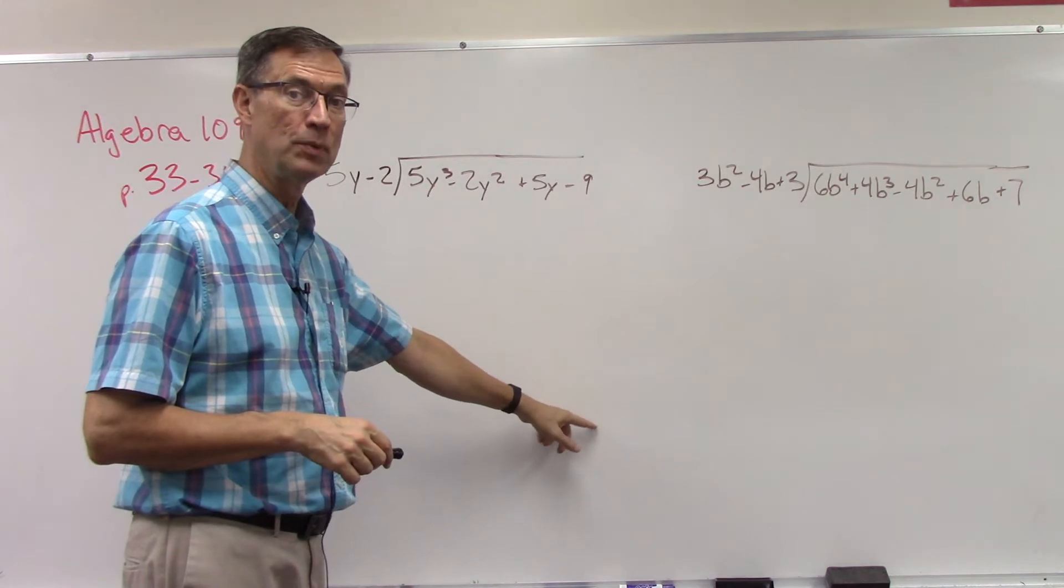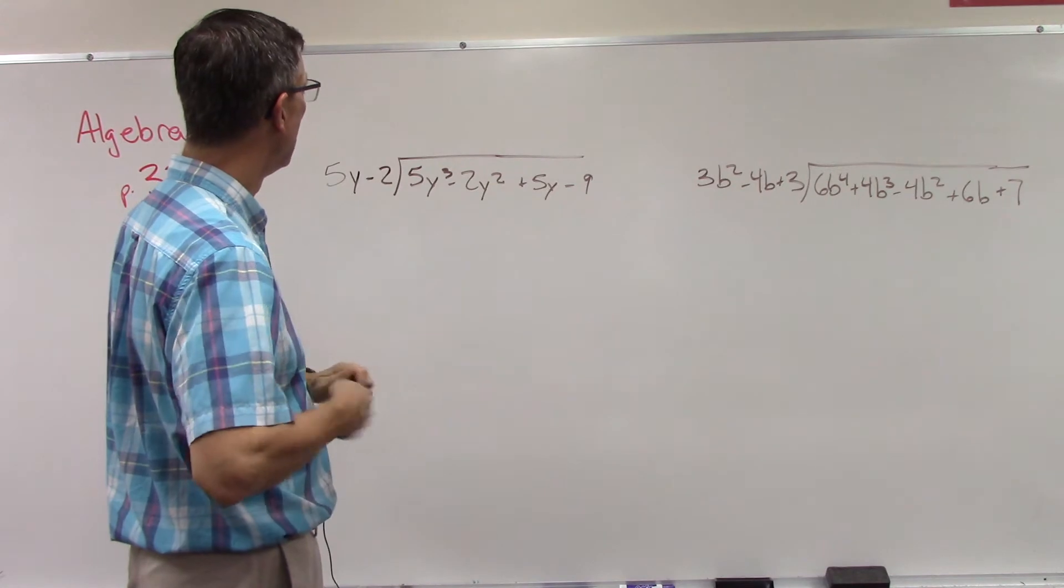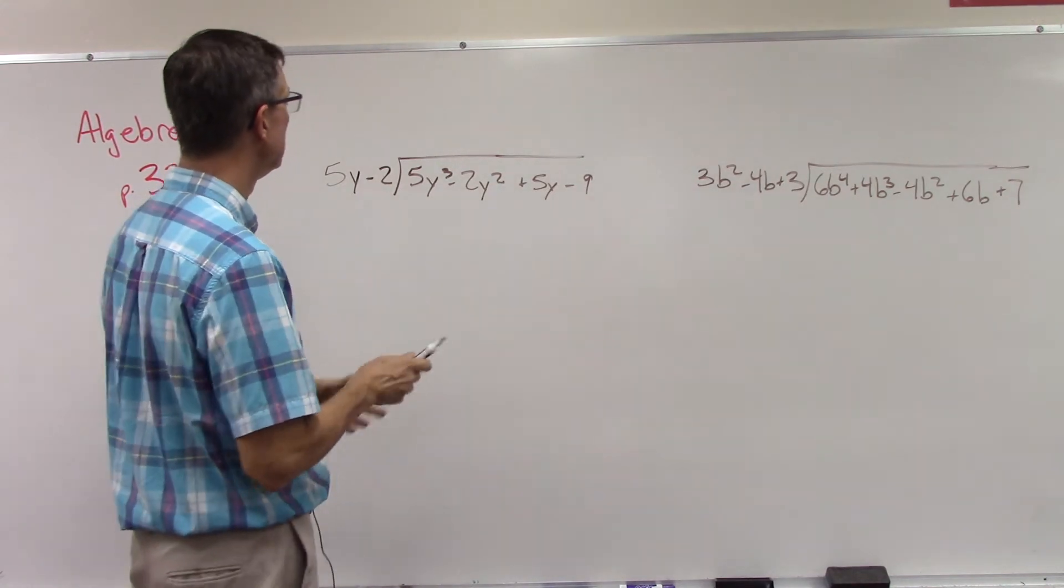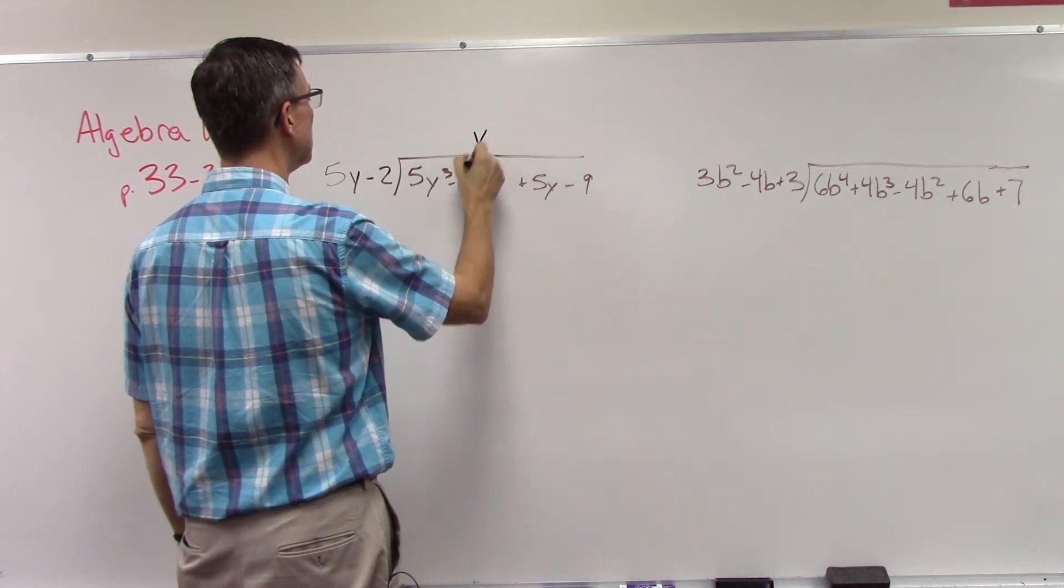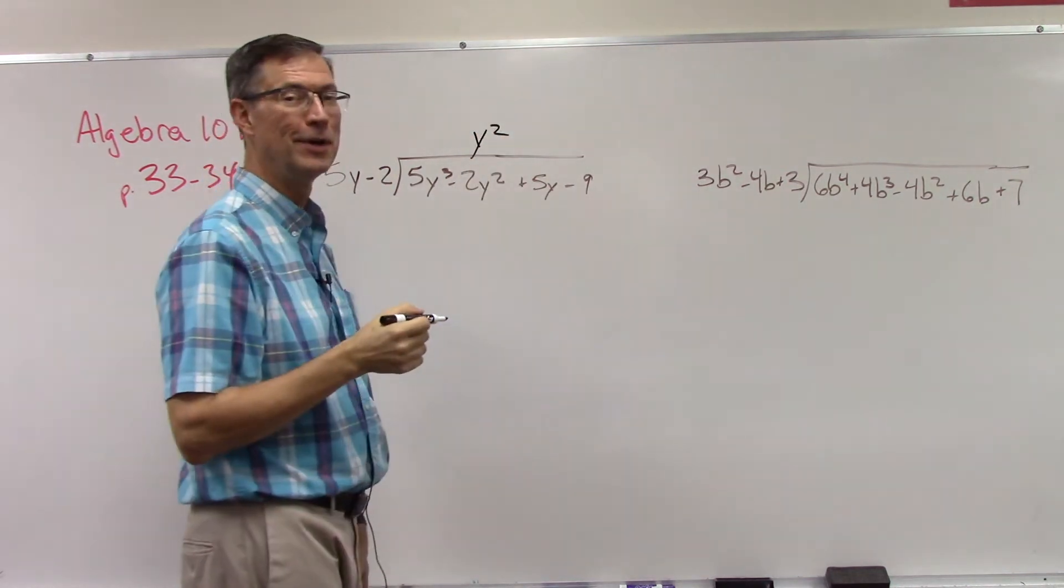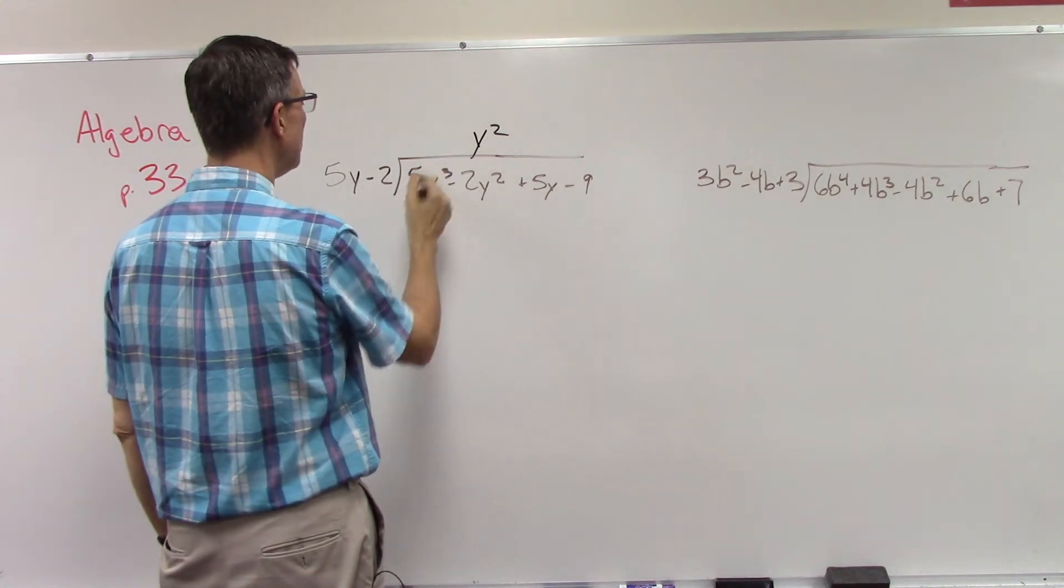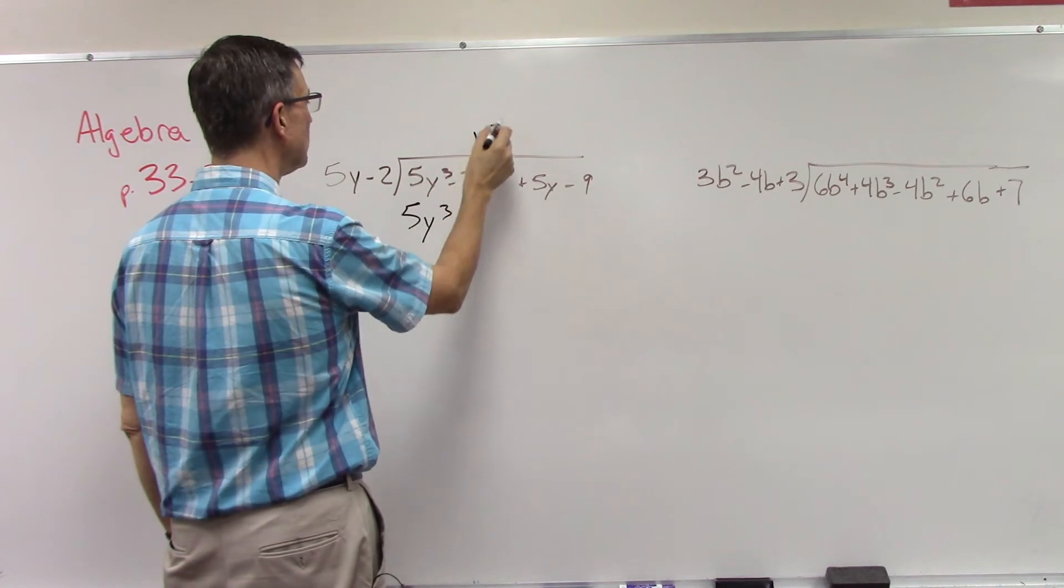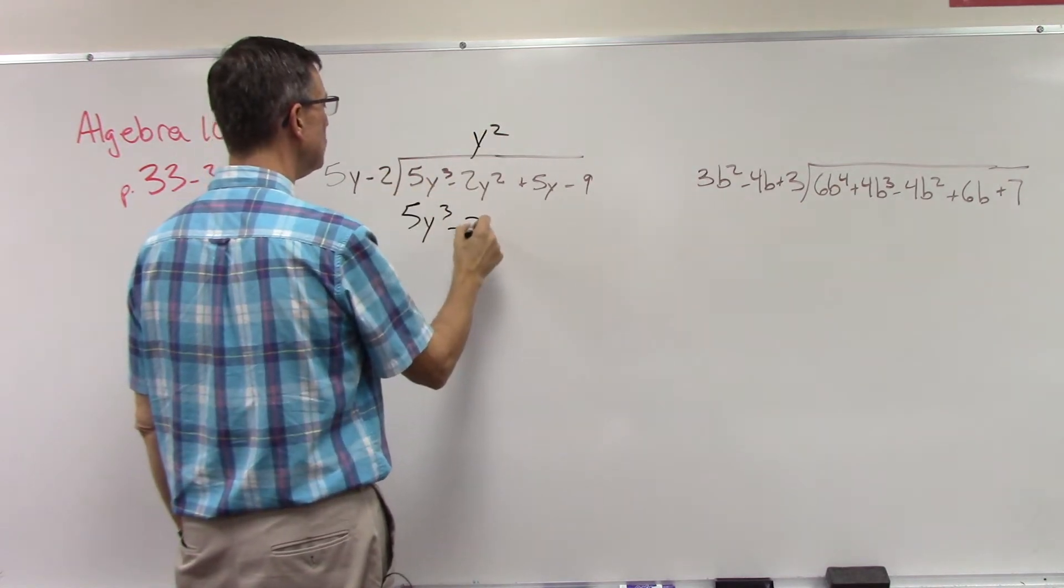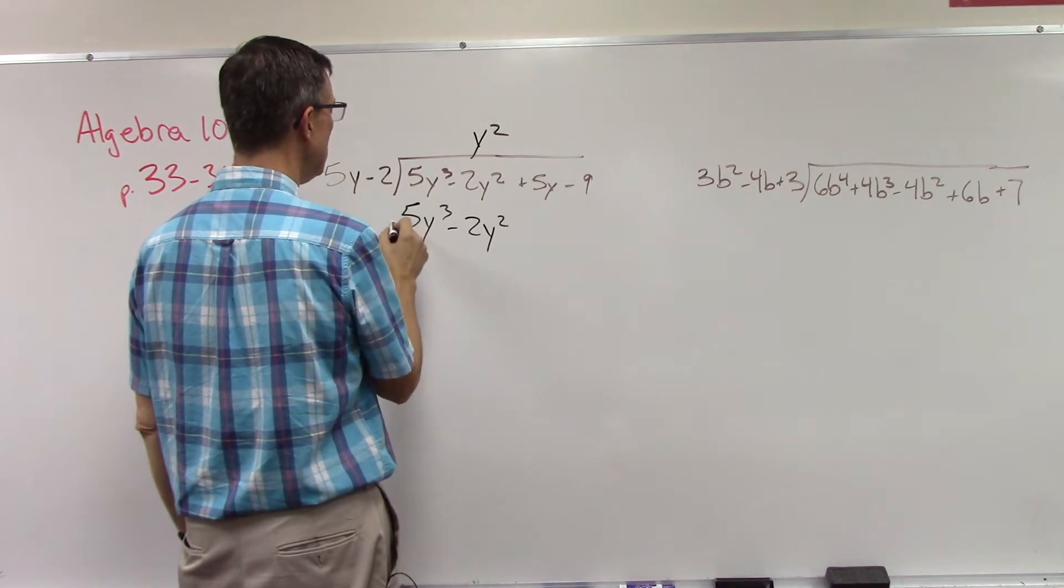Let's do 5y to the third divided by 5y. Do you get 5? Nope. Do we get x? Nope. We get y squared. 5y times y squared is 5y to the third. Then we multiply the y squared times negative 2, get negative 2y squared. Change these to their opposites when you add. They both cancel out, yay.